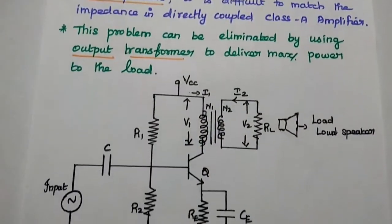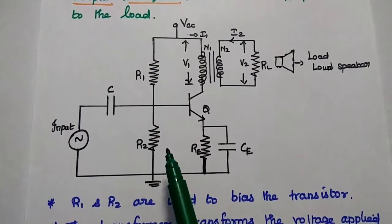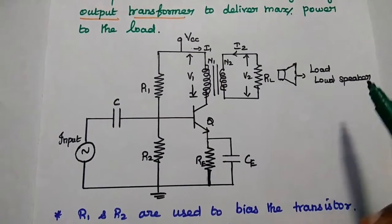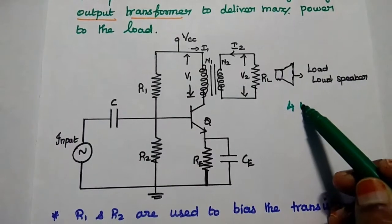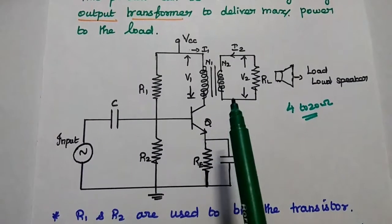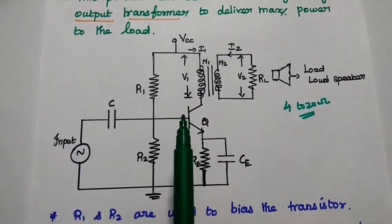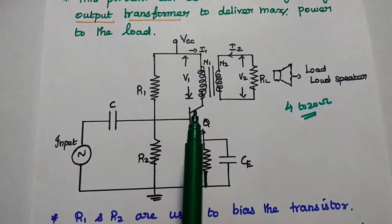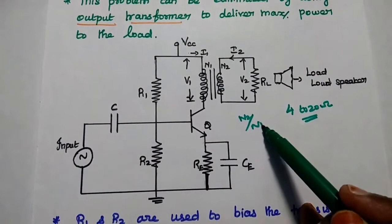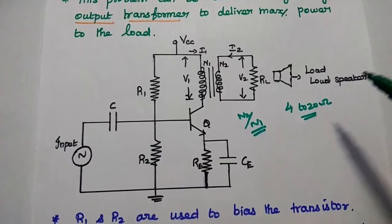Next, the circuit diagram of transformer coupled Class A amplifier. In this diagram, R1 and R2 resistors are mainly used to bias the transistor. Here the load is the loudspeaker load. A loudspeaker has an impedance range from 4 to 20 ohms, which is a very low value. This transformer is used to match the impedance at the output side. Whatever voltage is available at the primary winding side, we can transform that voltage to the other side, which is proportional to N2 by N1. So we can easily match the impedance values and deliver maximum power to the loudspeaker.